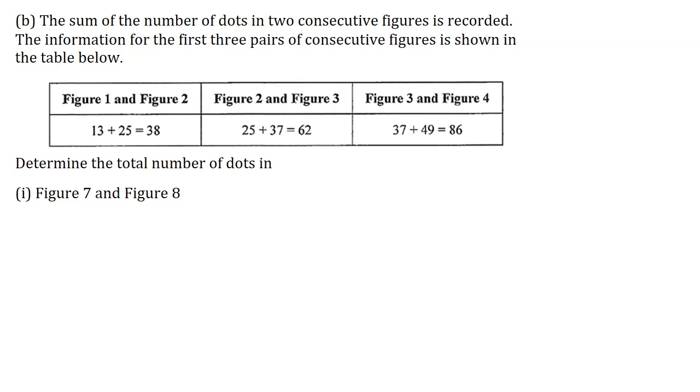Part B. The sum of the number of dots in two consecutive figures is recorded. The information for the first three pairs of consecutive figures is shown in the table below.